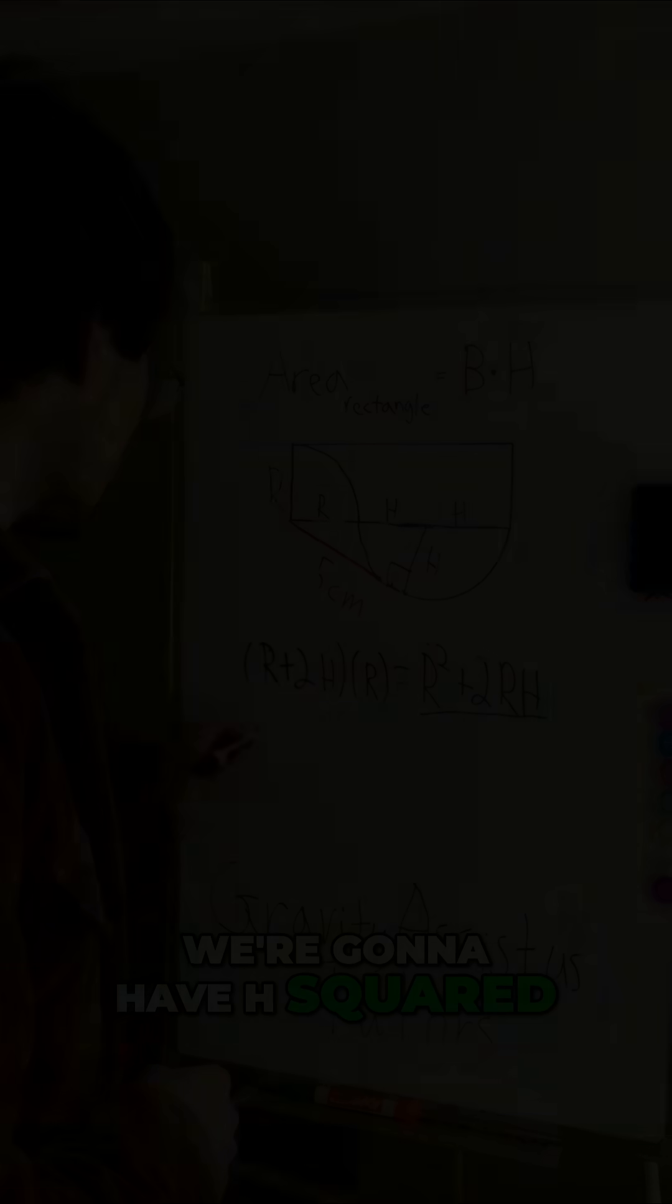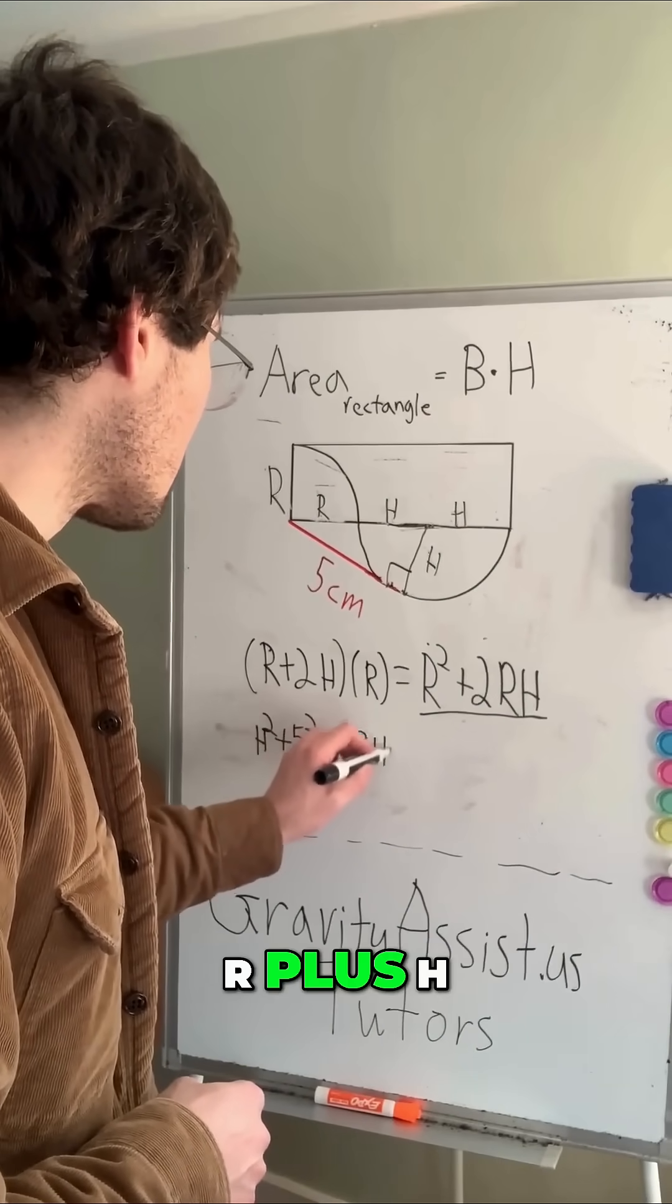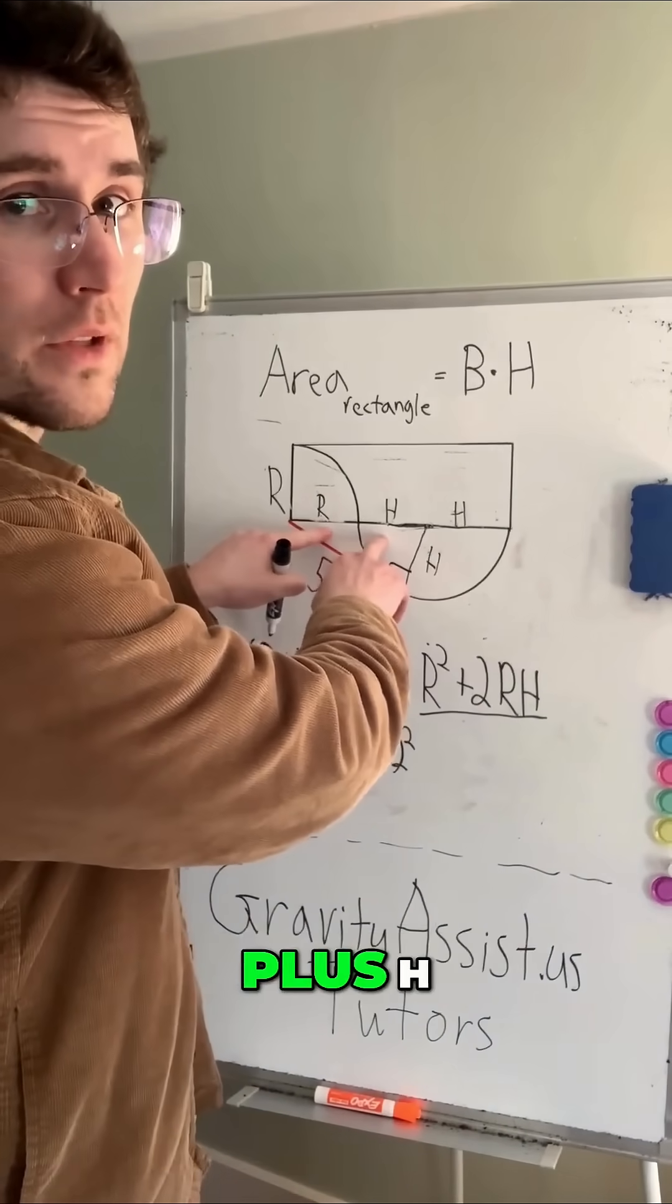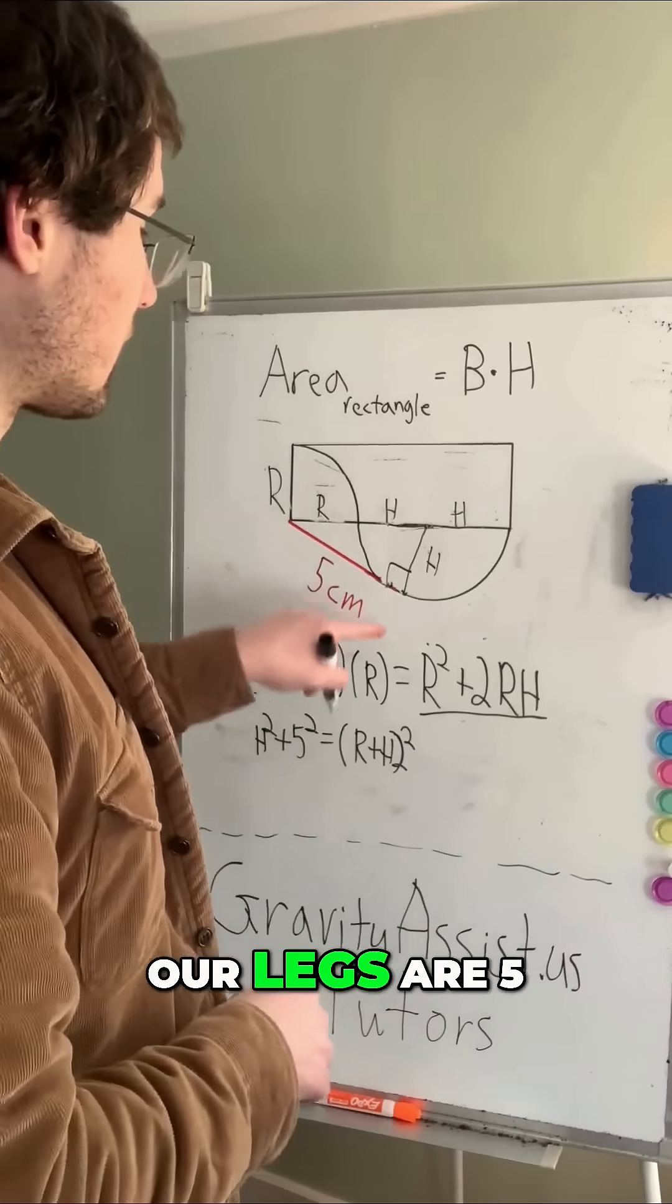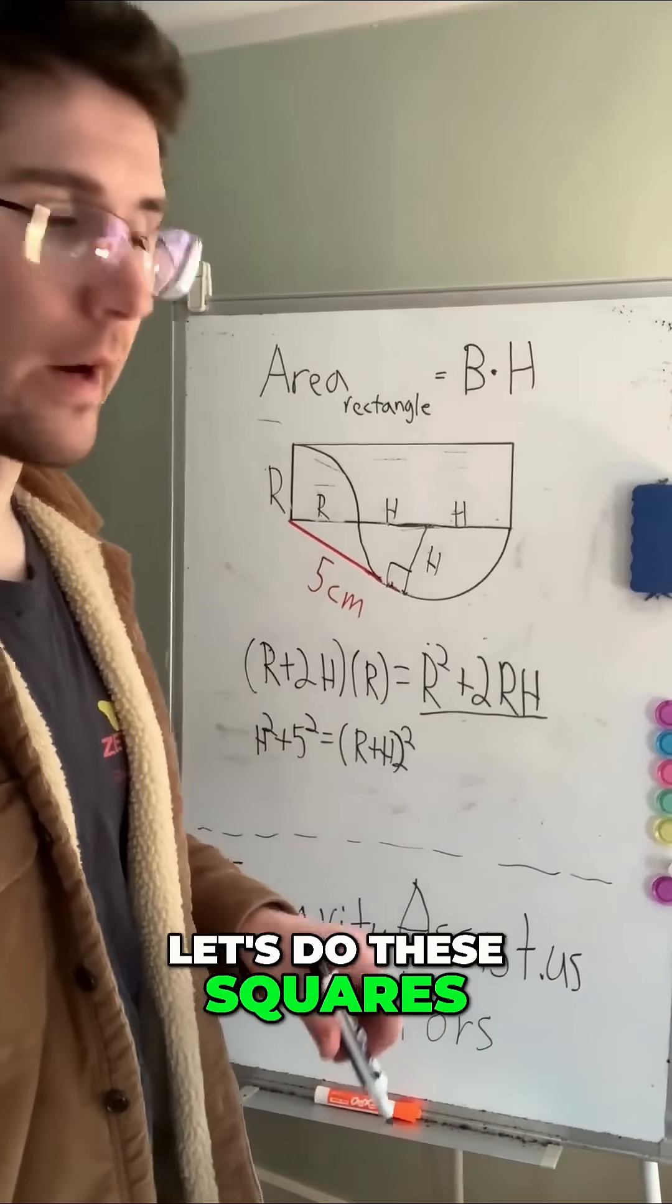So we're going to have h squared plus 5 squared equals r plus h squared. The reason we do that is because our hypotenuse is r plus h. And again, our legs are 5 and h. So let's do these squares.